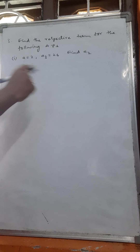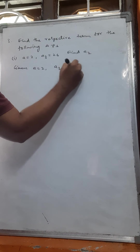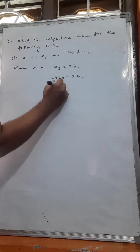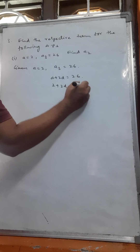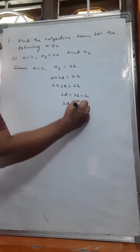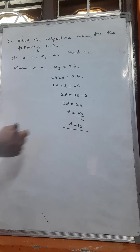Here a means the first term, a3 means the third term. First term is given and third term is given. Now we have to find the second term. a is equal to 2, a3 is equal to 26. Third term means a plus 2d is equal to 26. So 2 plus 2d is equal to 26, 2d is equal to 24, d is equal to 12.